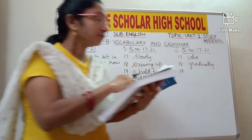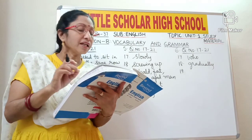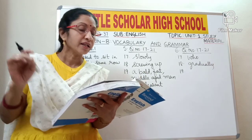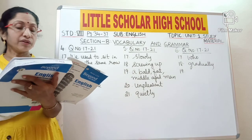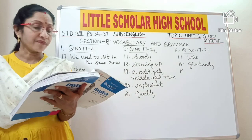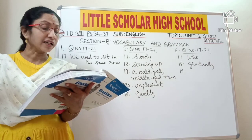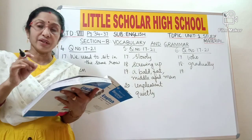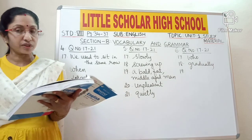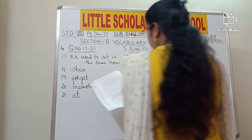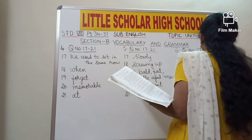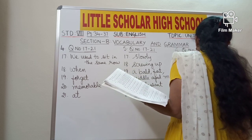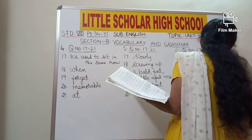Question number 19: 'District collector Nambiyar eldest daughter.' Correct the noun phrase and rewrite it. Whenever we talk about possession by a person, we use apostrophe S. So it should be 'District collector Nambiyar's eldest daughter' — Nambiyar apostrophe S, eldest daughter.